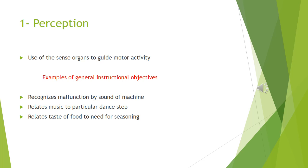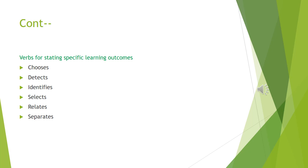Perception is the first level of psychomotor domain. It is concerned with the use of sense organs to obtain cues so that motor activity can be guided. General instructional objectives can be written as: recognizes malfunction by sound of machine, relates music to a particular dance step, and relates taste of food to need for seasoning. Verbs for stating specific learning outcomes include: chooses, detects, identifies, selects, relates, and separates.